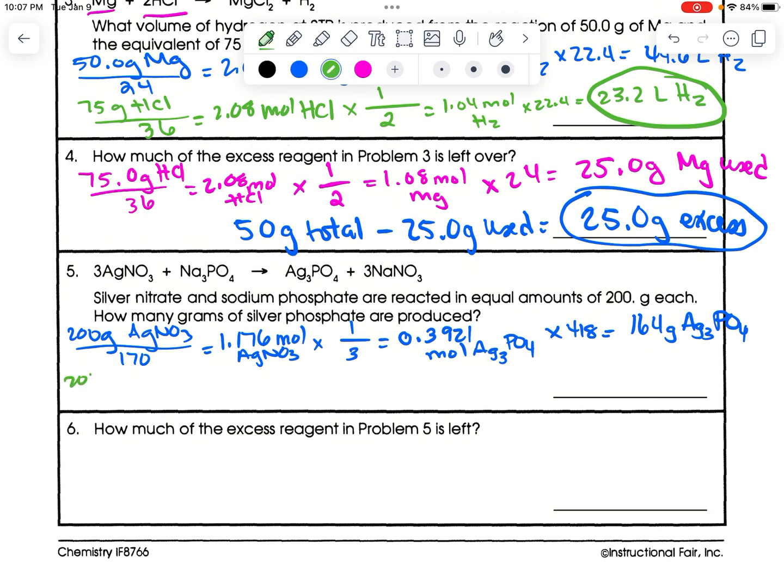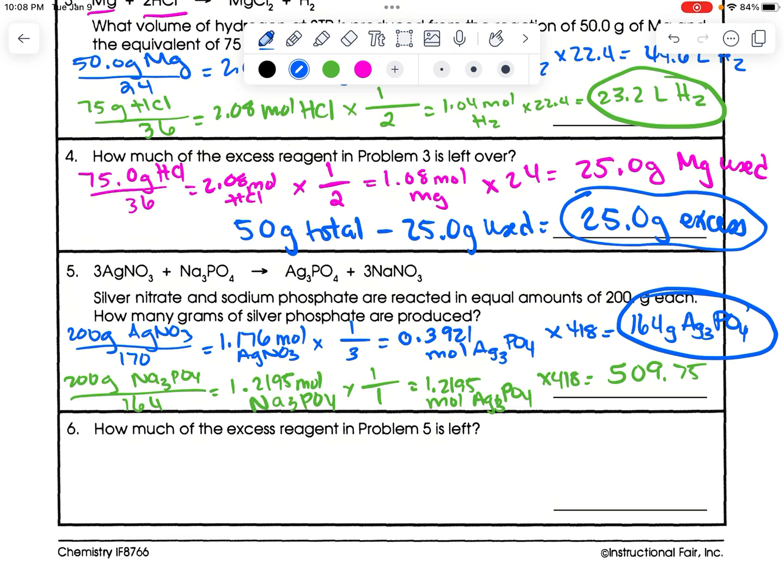The other way. So again, we have 200 grams, but this is of sodium phosphate, Na3PO4. Divide by the GFM of that, which is 164. And you get 1.2195 moles of sodium phosphate. I seek silver phosphate. So that's a 1. Sodium phosphate has 1. So it's 1.2195 moles of Ag3PO4. Then I multiply it by the 418 and I get something much bigger, 509.75. Okay. So again, the actual answer is 164 because this bigger number will not exist. So that's not right.